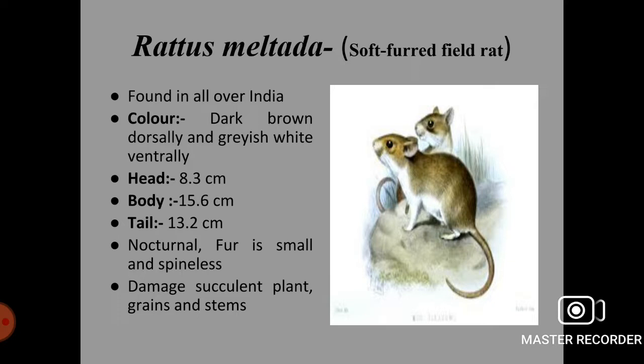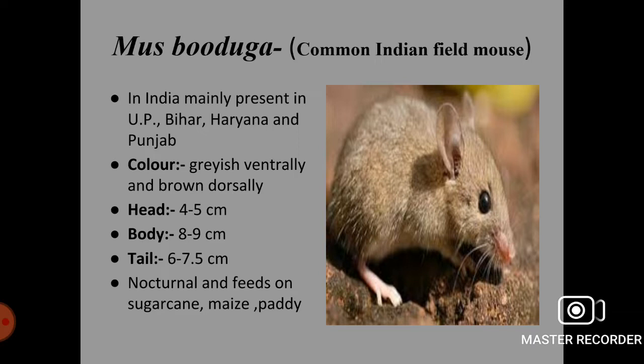Next rodent species is Mus booduga, the Indian field mouse. In India, it is mainly present in states like UP, Bihar, Haryana and Punjab. The color is grayish ventrally and brown dorsally. Head length is 4 to 5 cm, body length is 8 to 9 cm, and tail length is 6 to 7.5 cm. This species is also nocturnal and feeds on crops like sugarcane, maize, paddy, etc.